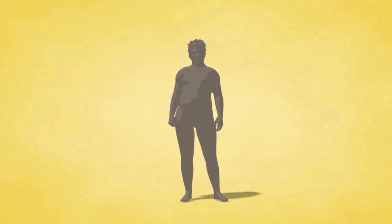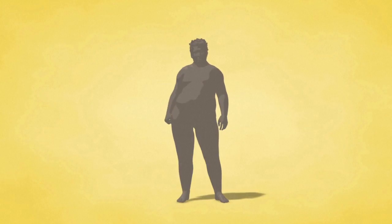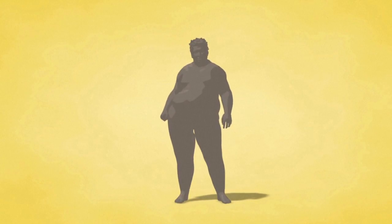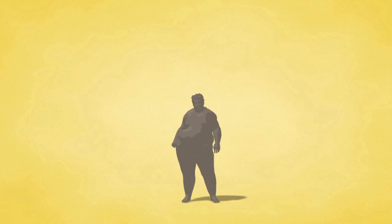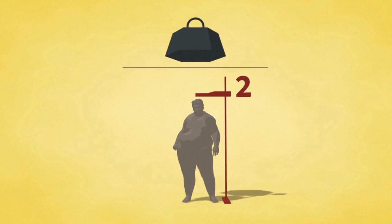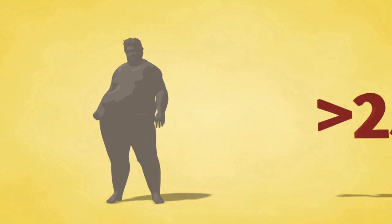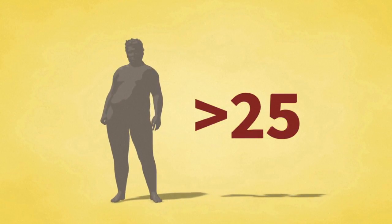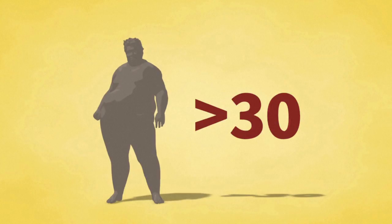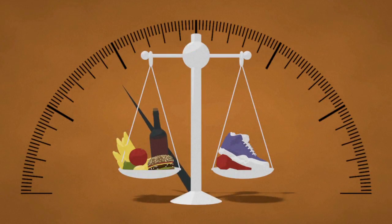Obesity is defined as abnormal or excessive fat accumulation that may impair health. It's measured using the Body Mass Index, which is your weight in kilograms divided by squared height in meters. Anyone with a BMI of 25 or above is classified as overweight. Those with 30 or above are classified as obese.